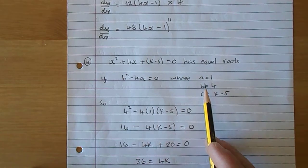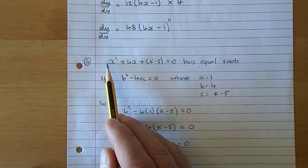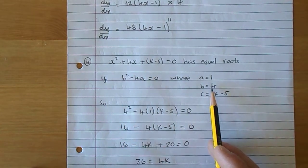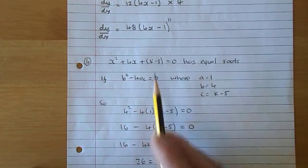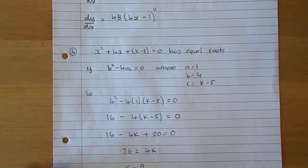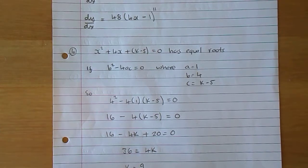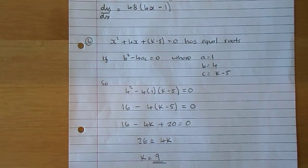So b squared minus 4ac. It's ax squared, so a is 1, plus bx, so b is 4, plus c, c is k - 5. So these are what we're going to use for our discriminant.